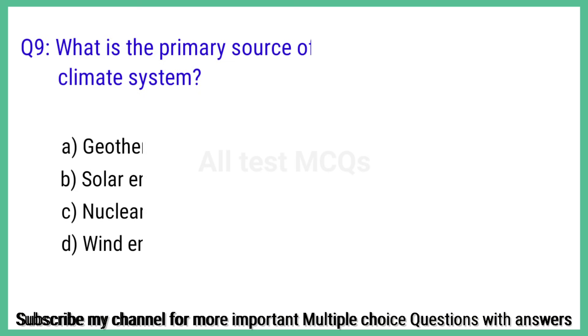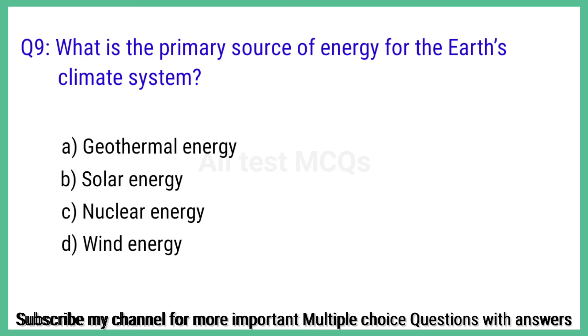Question number 9. What is the primary source of energy for the Earth's climate system? The correct answer is option B: Solar energy.